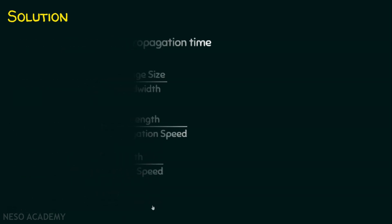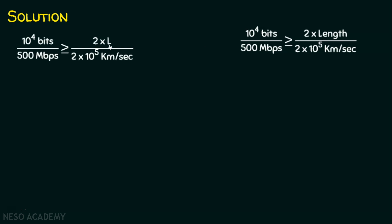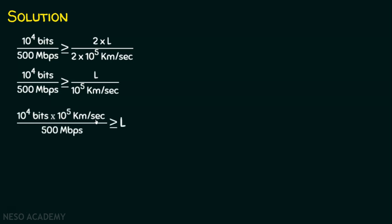Bringing the equation to a fresh page and replacing length with L, we simplify. The 2 on both sides cancels, giving L / 10^5 km/s on the right-hand side. Rearranging, we get: (10^4 bits × 10^5 km/s) / 500 megabits per second ≥ L.